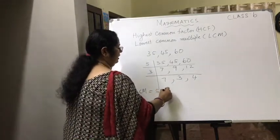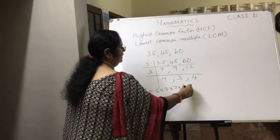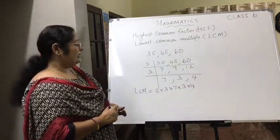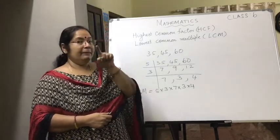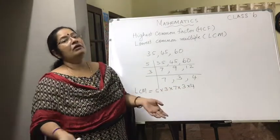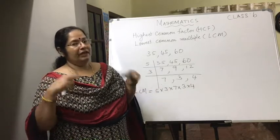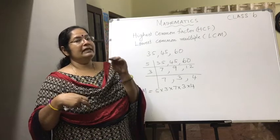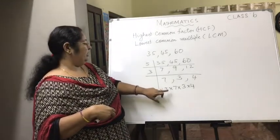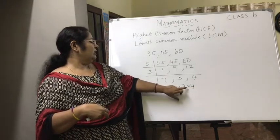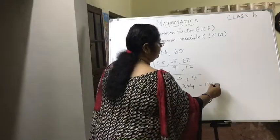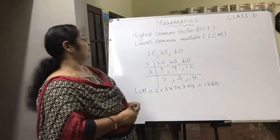The LCM is the product of all the outer numbers: 5 × 3 × 7 × 3 × 4. Calculating: 5 × 3 = 15, 15 × 4 = 60, 60 × 3 = 180, 180 × 7 = 1260. So the LCM of 35, 45, and 60 is 1260.